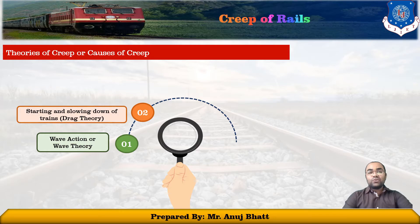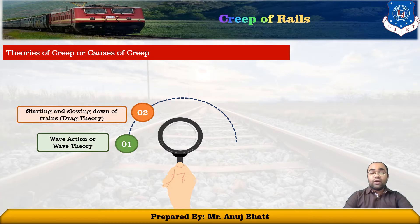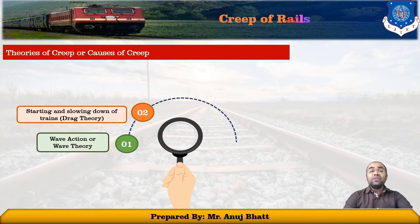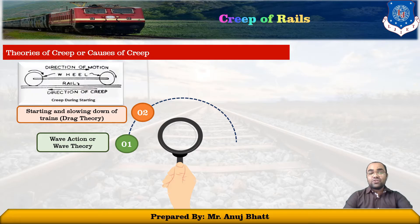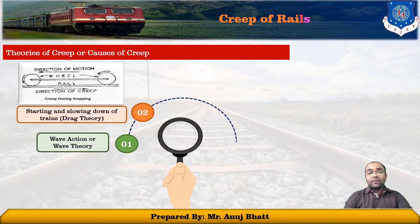The second is the drag theory — starting and slowing down the train. In this theory, forces act at the time of starting and also when applying acceleration, slowing down, or stopping the train. This sometimes causes creep. During starting, the wheels push the rails in the backward direction, while during stopping, the wheels push the rail in the forward direction, causing creep in the forward direction.